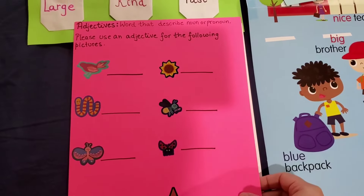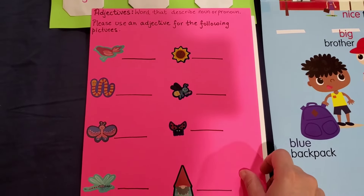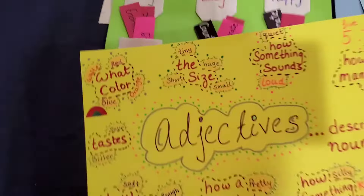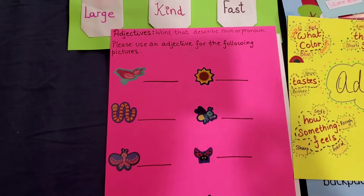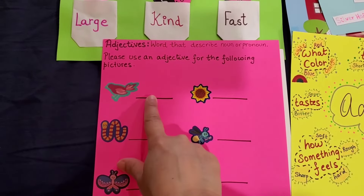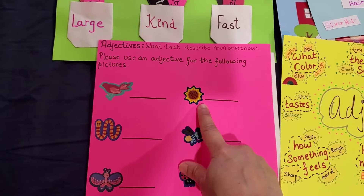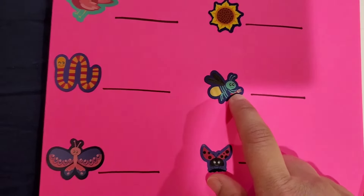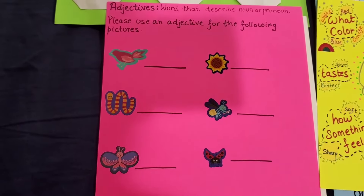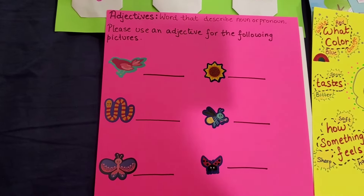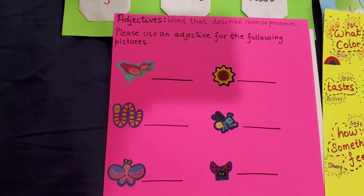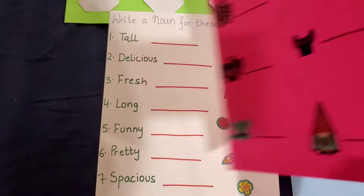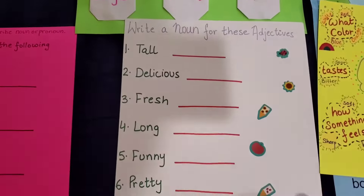The next activity says: 'Adjective — word that describes a noun or pronoun. Please use an adjective for the following pictures.' There are lots of pictures — a bird: maybe a pink bird, a beautiful bird, or a chirping bird. A sunflower: a glowing one. A bee — or you could say she looks hungry because she's holding a fork. A snake that looks like the Gryffindor snake from Harry Potter because of the stripes. Let your kid's imagination run free and let them write whatever words describe the pictures.